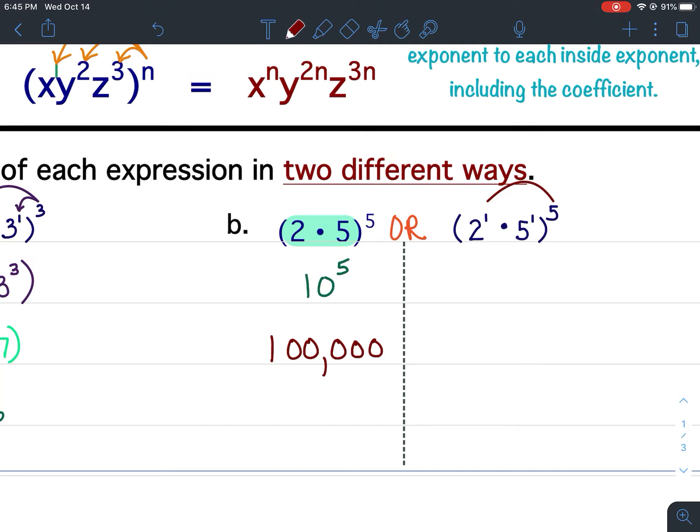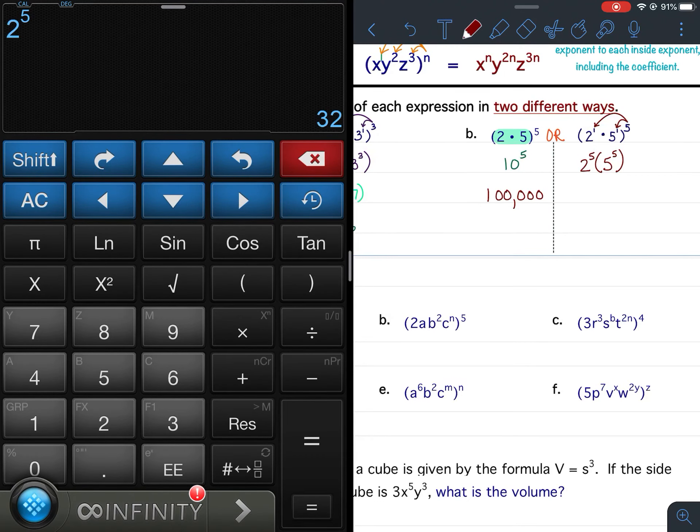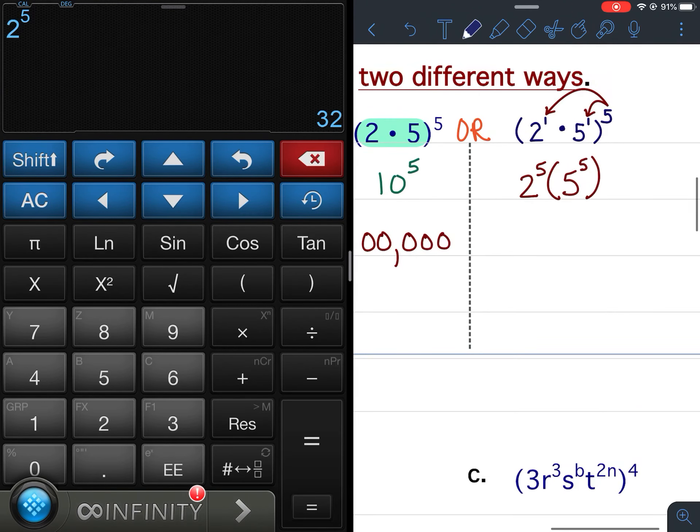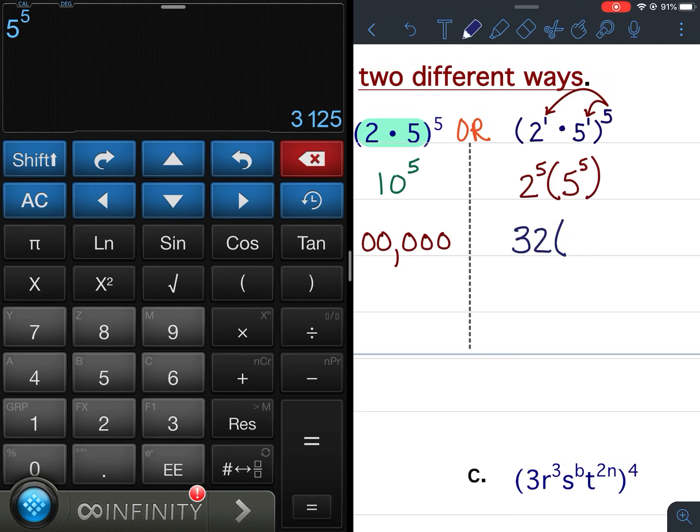If I do it using the power of products property, I'm going to multiply the exponents. So this would be 2 to the 5th and then 5 to the 5th. 2 to the 5th power is 32. 5 to the 5th power is 3,125. Multiply them together, and we get the same thing. So we get 100,000.